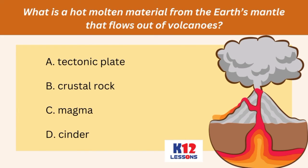What is a hot molten material from the earth's mantle that flows out of volcanoes? A. Tectonic plate. B. Crustal rock. C. Magma. D. Cinder.